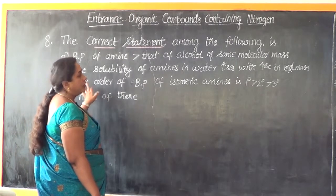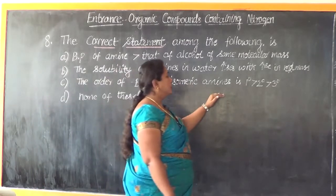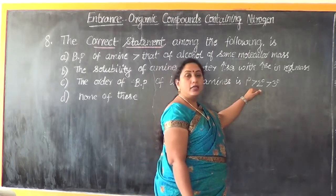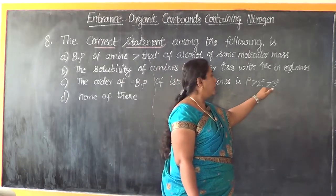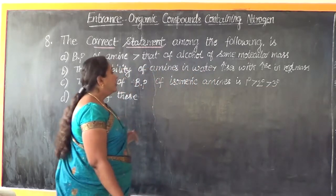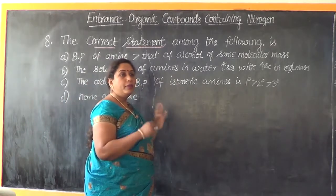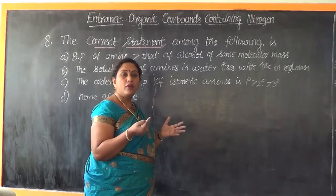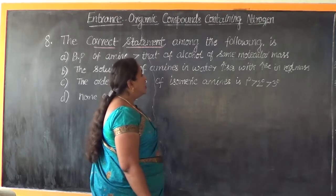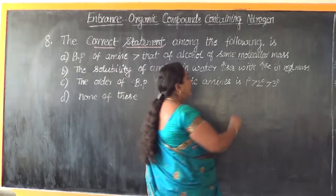The option that seems to be correct is: the order of boiling point of isomeric amines is primary greater than secondary greater than tertiary. This is true. For isomeric amines having the same molecular formula, when we compare primary, secondary, and tertiary amines, obviously the primary amines have the greatest boiling point.